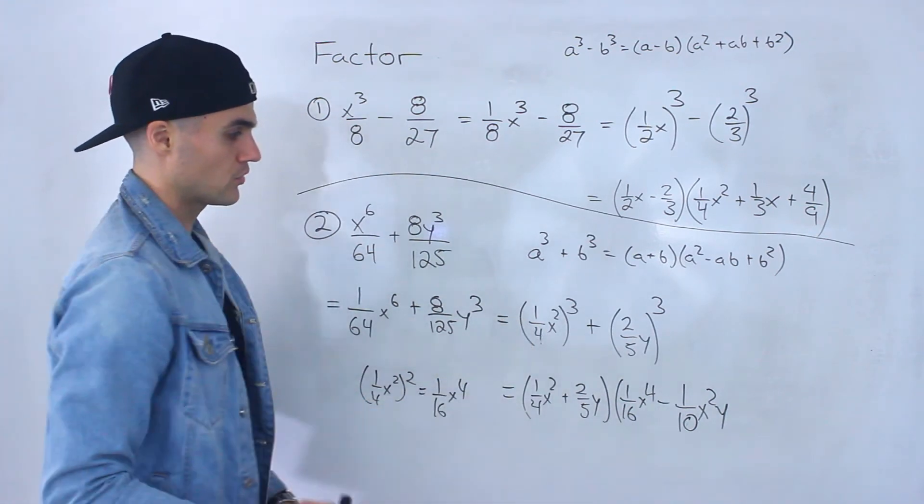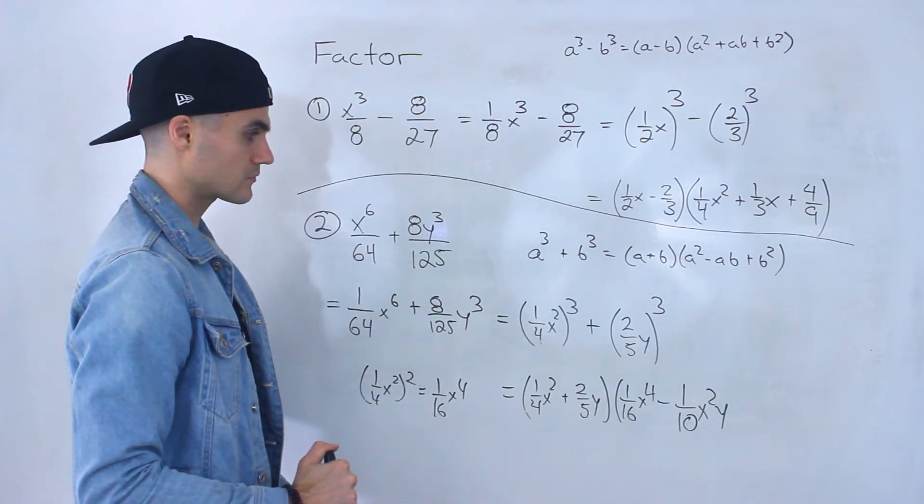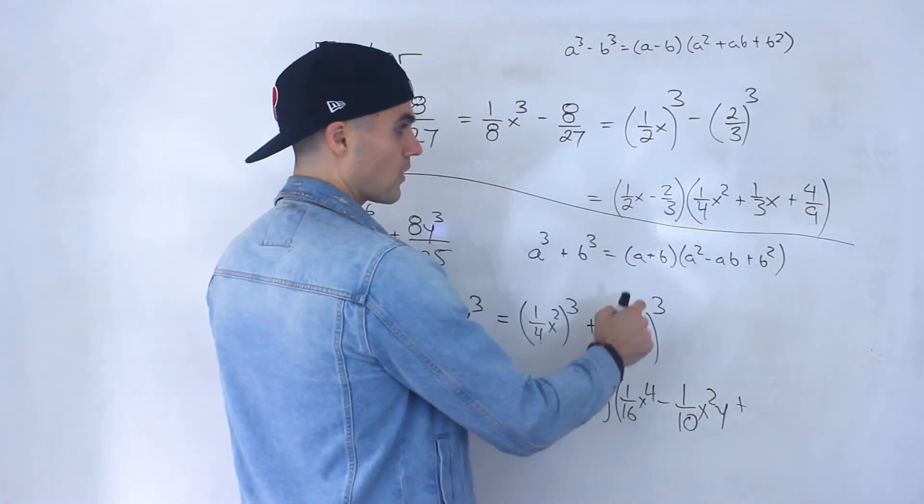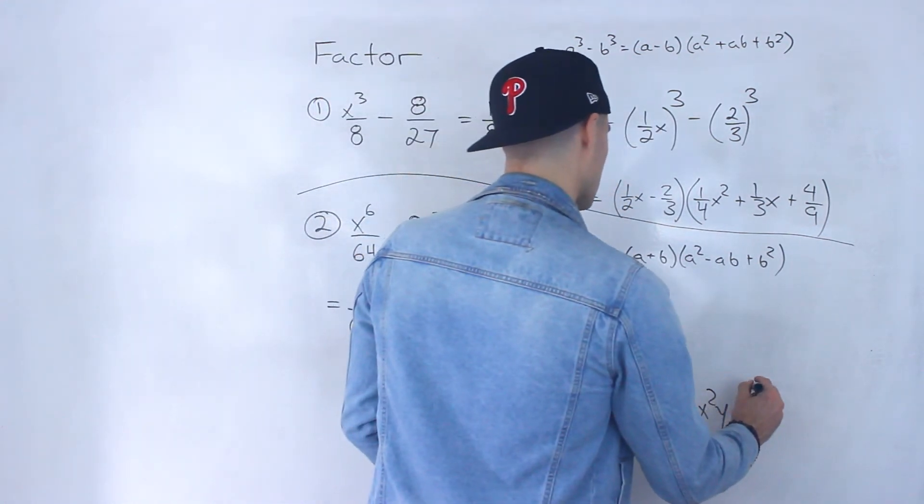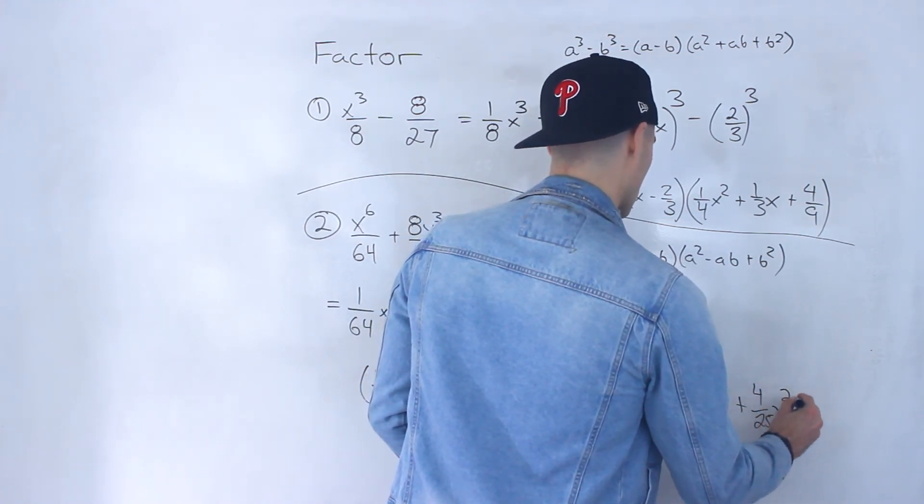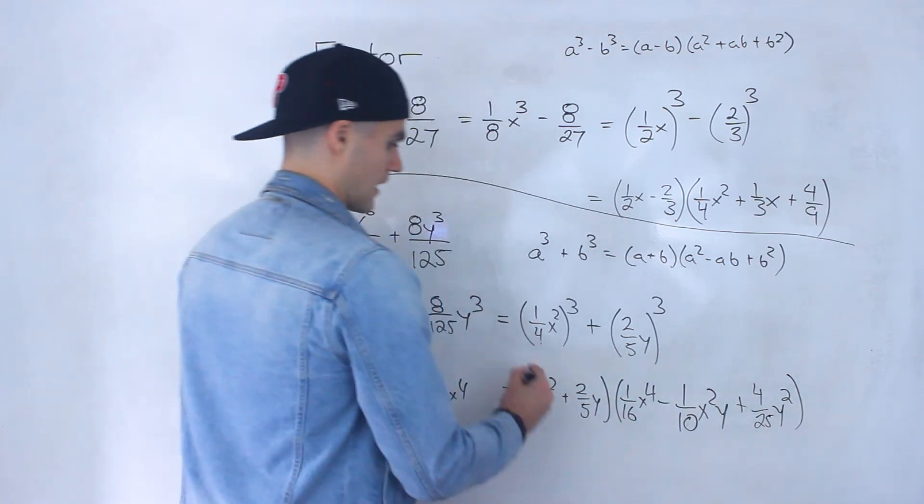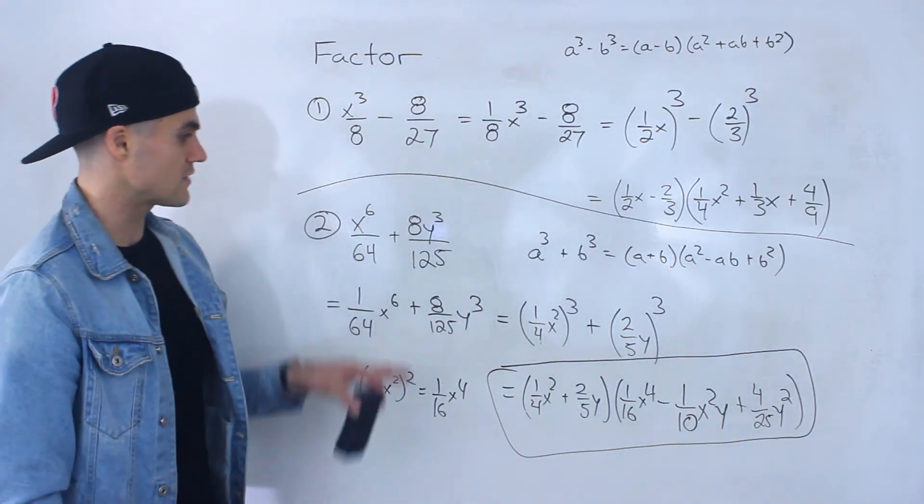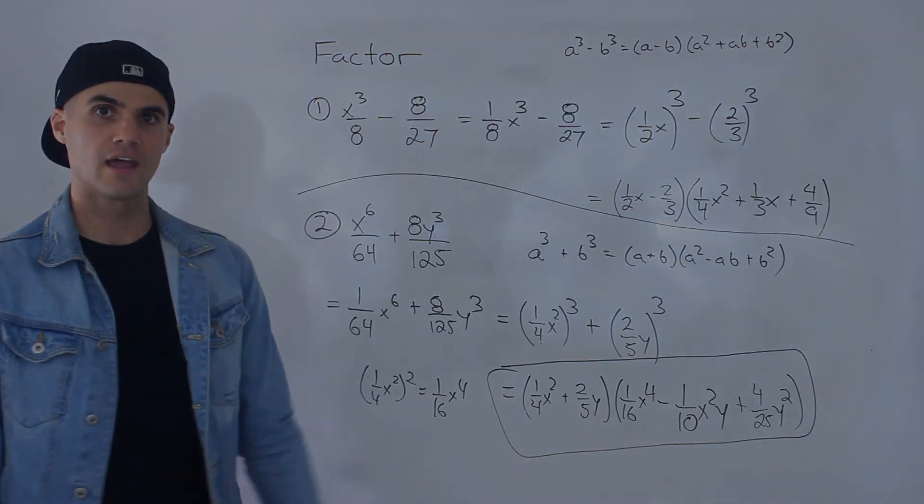I'd end up with 1 over 10x squared y plus 2 over 5y to the power of 2 would be 4 over 25y squared. And so that there ends up being your final answer. That's the factored form for that expression.